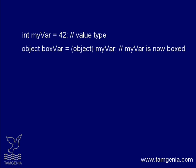When boxing happens, memory is allocated on the heap. The amount of allocation is the size of the value type plus the amount of memory needed to hold the object and its internal structure. In our example, because myvar is integer type, the memory allocation amount equals the size of an integer plus the amount needed to hold the object. The value type's value is then copied to the newly allocated heap memory. The address of the newly allocated object is placed on the stack and now points to our reference type.